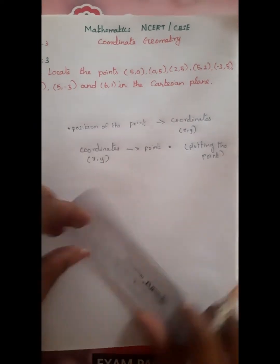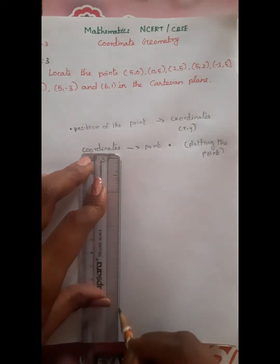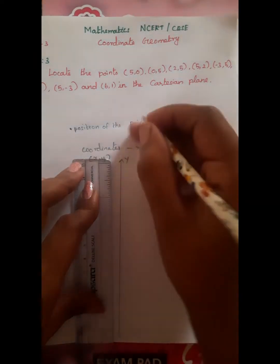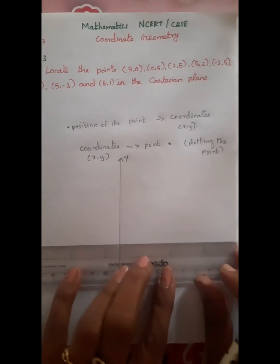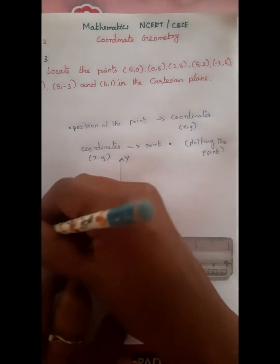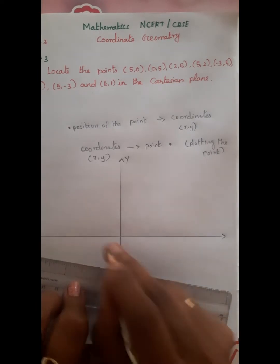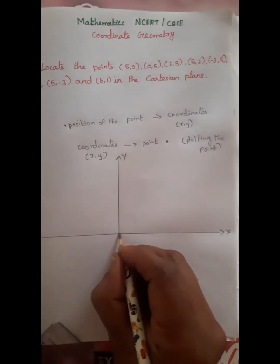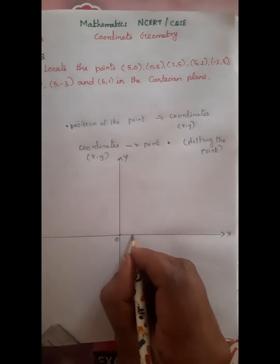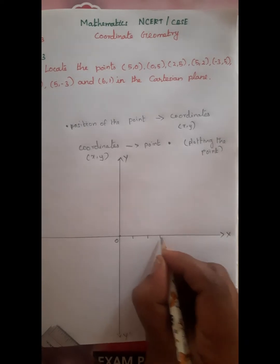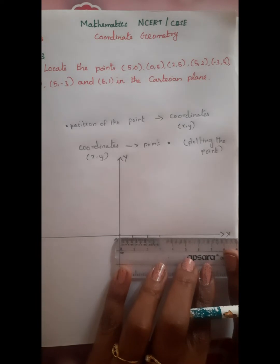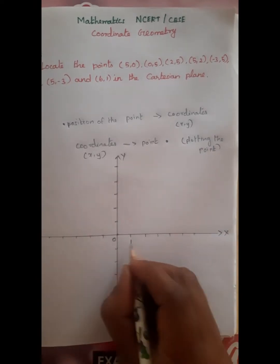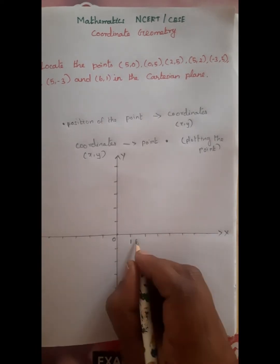The y-axis is a vertical line. This is the y-axis, with positive direction going up and negative direction going down — called y-dash. The x-axis is horizontal. The center is the origin. We use a scale of 1 centimeter equal to 1 unit, marking 1, 2, 3, 4, 5, 6 along the axes.